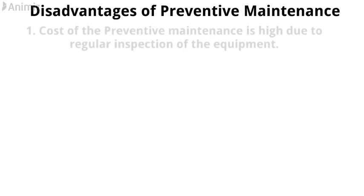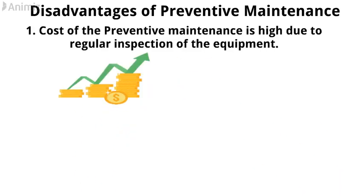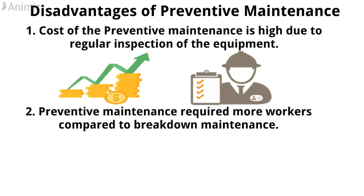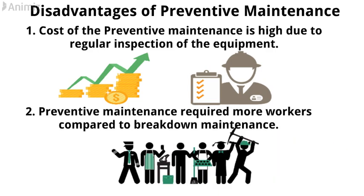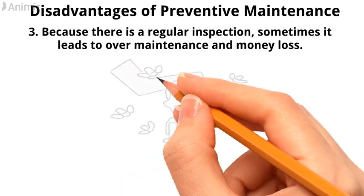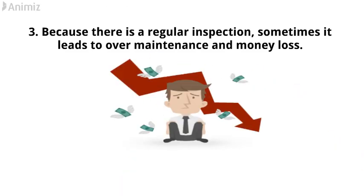Disadvantages of preventive maintenance: one, the cost of preventive maintenance is high due to regular inspection of equipment; two, it requires more workers compared to breakdown maintenance; three, because of regular inspection, it sometimes leads to over-maintenance and loss of money.